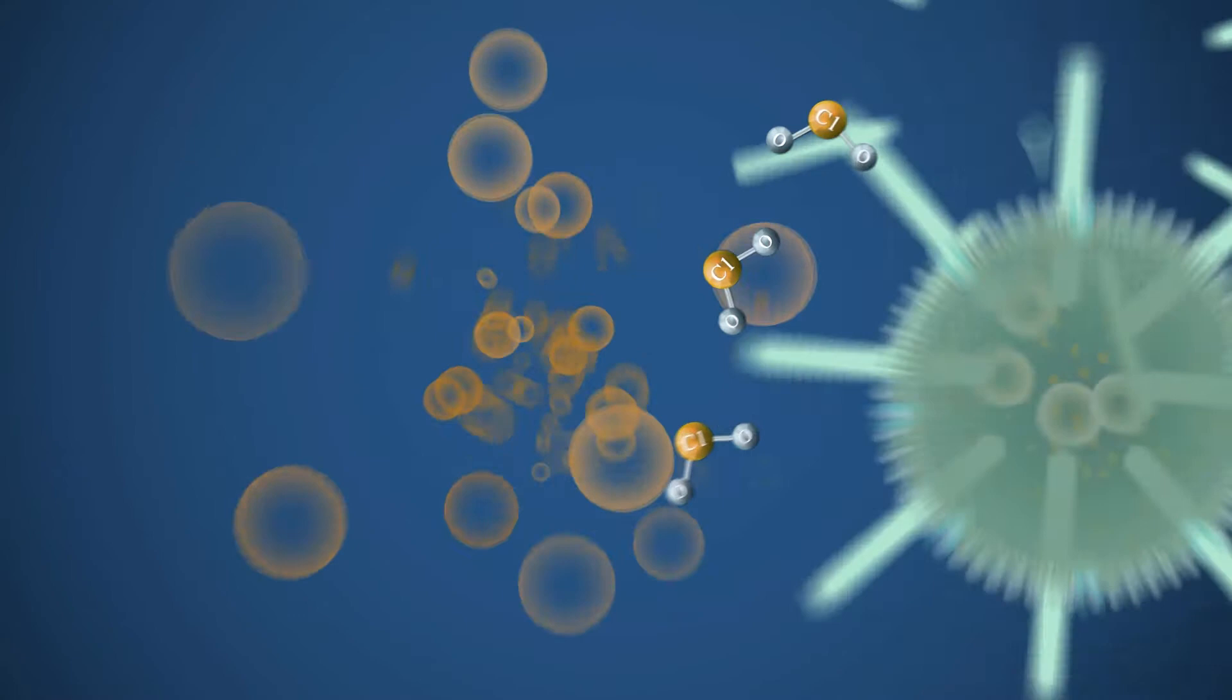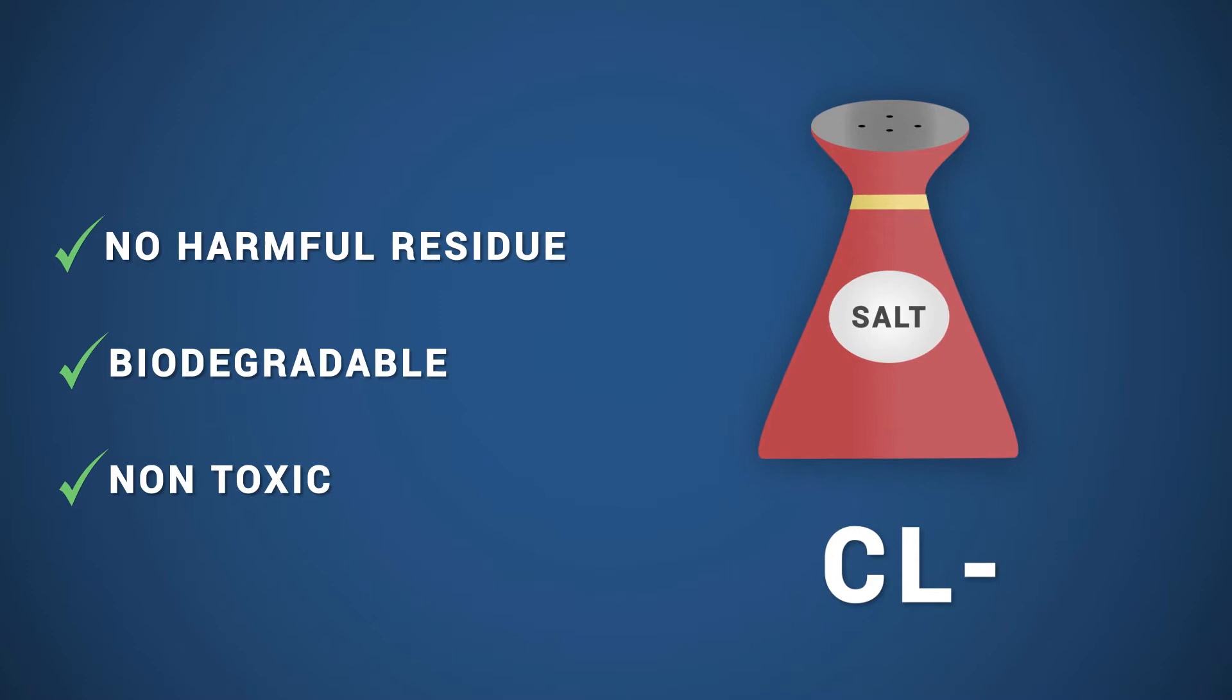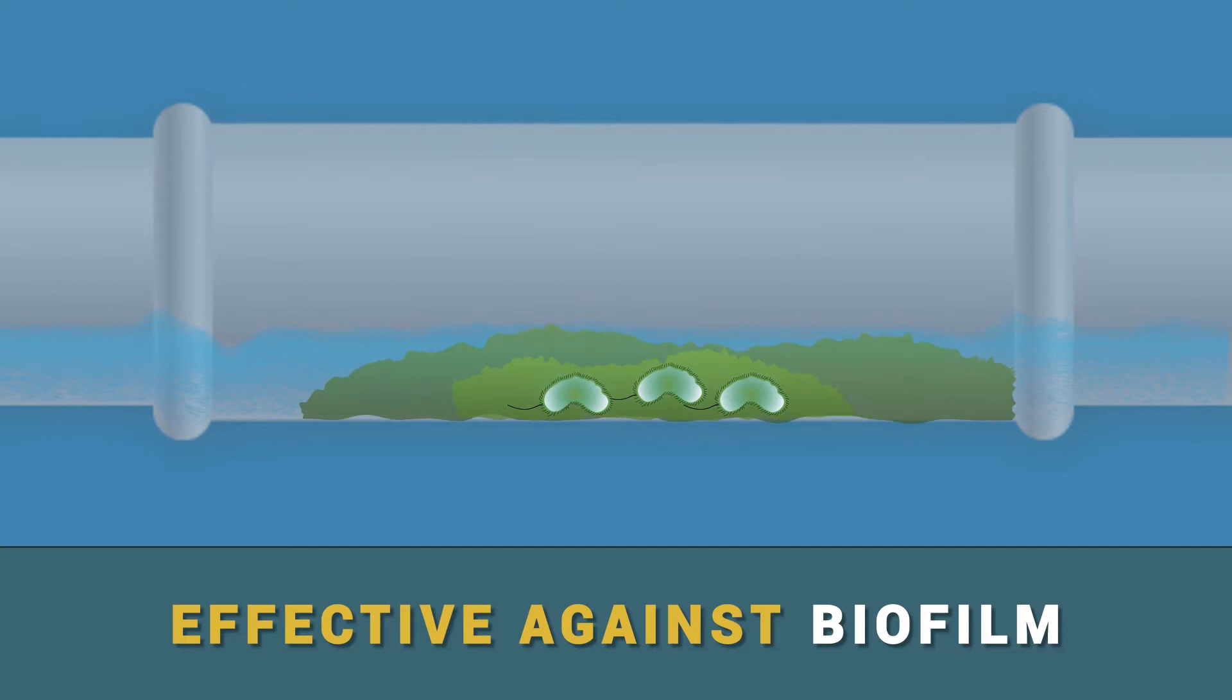ClO2 is singularly effective against biofilm, the layer of bacterial slime which builds up in pipework, water storage tanks and reservoirs, leading to blocked pipes and decreased water quality.